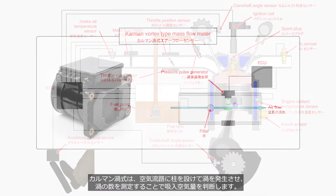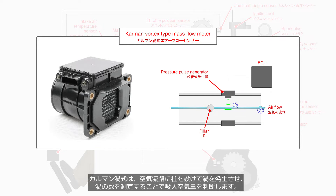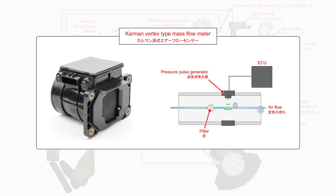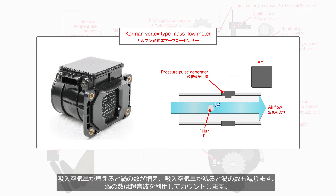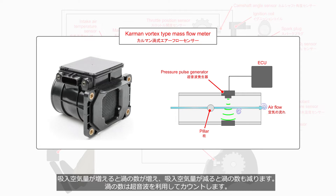The Karman Vortex type creates vortices via a pillar in the air passage and determines the air intake volume by measuring the number of vortices. As the air intake volume increases, the number of vortices also increases, and as the air intake volume decreases, the number of vortices decreases as well. The ECU counts the number of vortices by using pressure pulses.